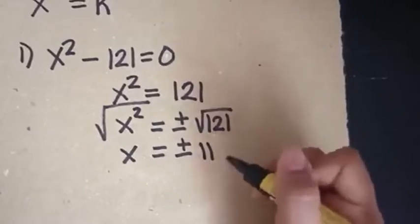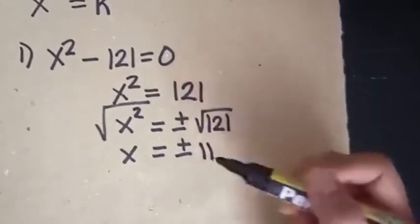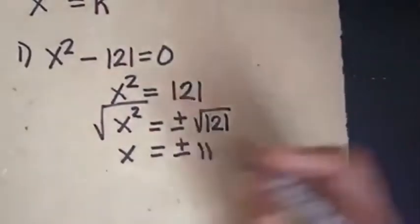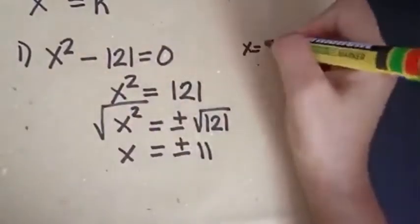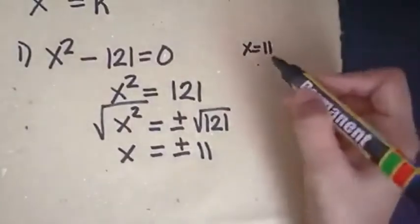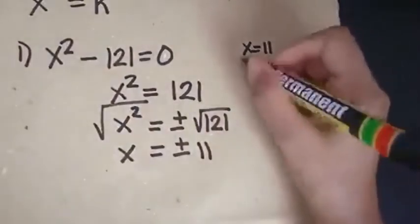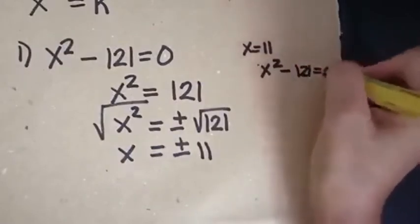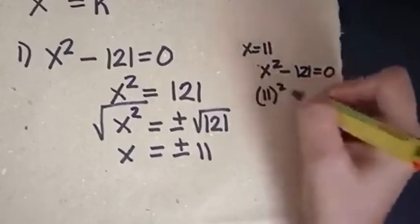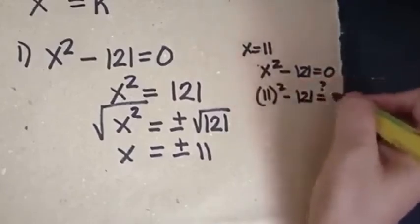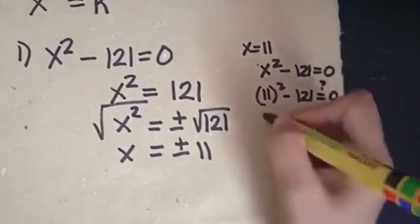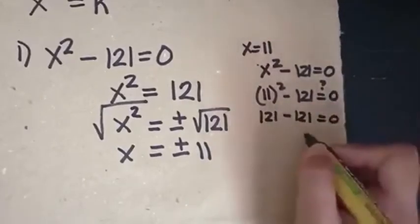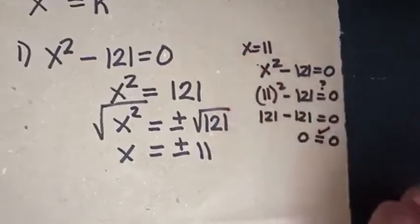In checking, we must use the original equation. For x equals positive 11, we replace 11 in the original equation: 11 squared minus 121 equals 0. Since 11 squared is 121, we get 121 minus 121 equals 0, so 0 equals 0. That is correct.